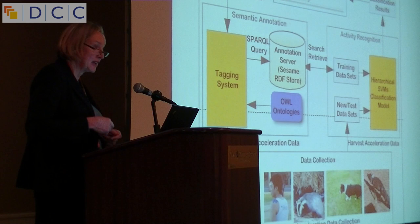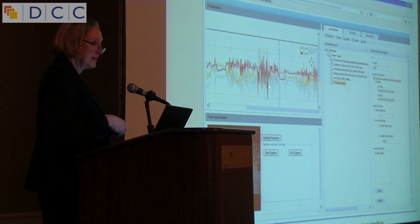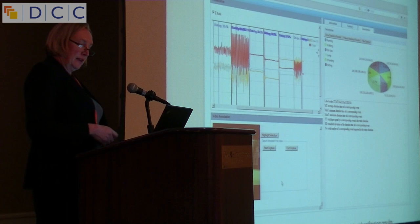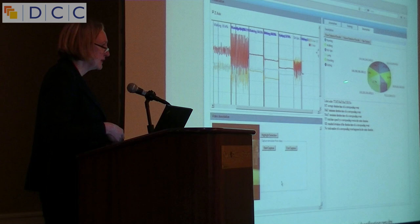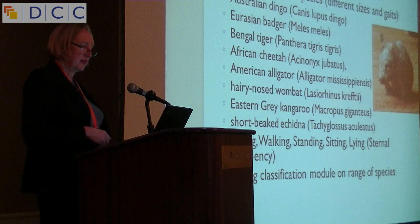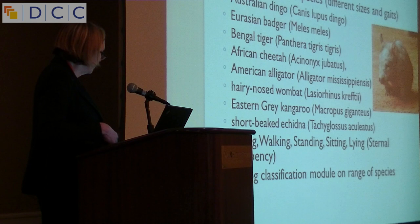This is what the user interface looks like. Here's the video window — you can scroll up and down, choose particular segments, and tag them using the ontology. After you run the activity recognition system, it generates statistical visualisations showing the percentage of time animals spend on different activities. We've tested this on a range of species: dingoes, tigers, cheetahs, alligators, wombats, kangaroos, and echidnas. We use our domestic dog classifier and test it on different species.